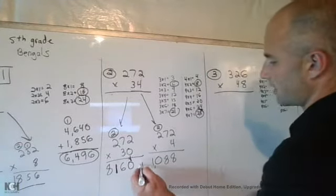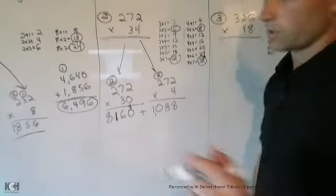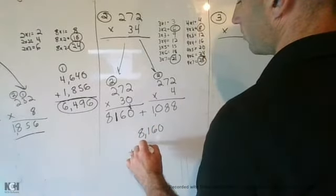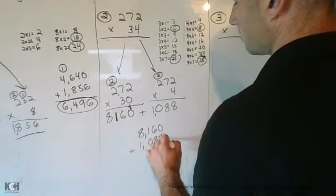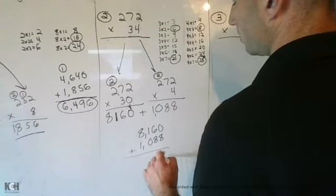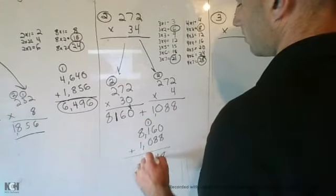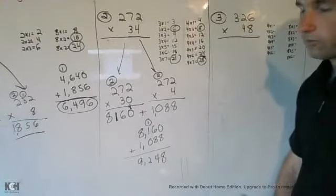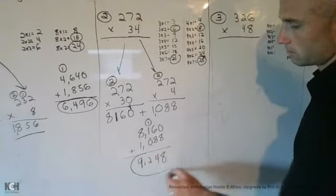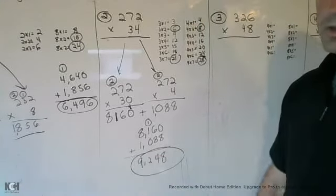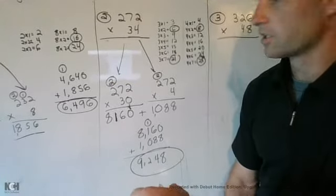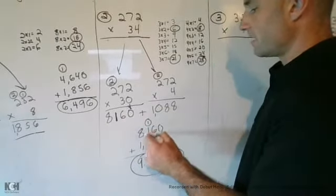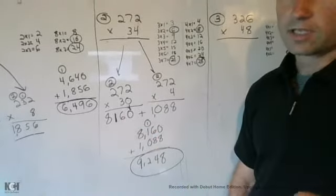And last but not least, I got to add those guys up. So 8,160 plus 1,088 will give me a solution of 9,248. So some possible mistakes that could have occurred here is you got so far in getting this part right and getting this part right and this part right, but you didn't add up correctly. That happens occasionally.